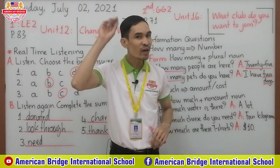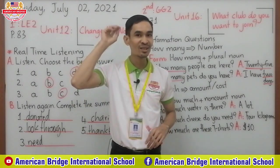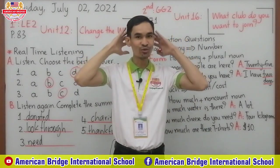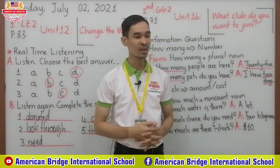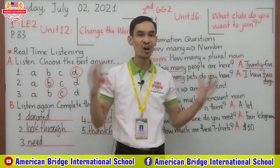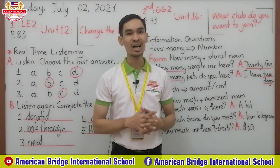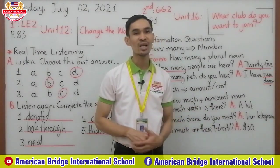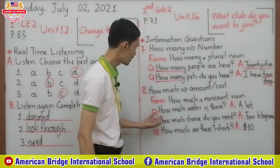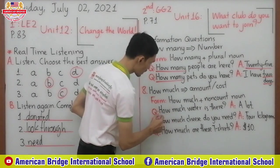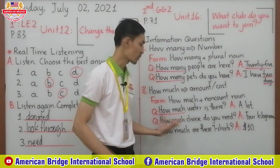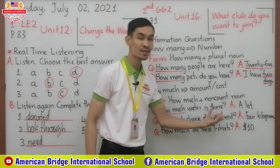Uncountable noun means the noun that we cannot count. For example, can you count your hair? No — the full head of hair you cannot count. Can you count water? No, you cannot. So hair and water are uncountable nouns, also called non-count nouns. We use 'how much' with non-count nouns. Look at the example: 'How much water is there?'